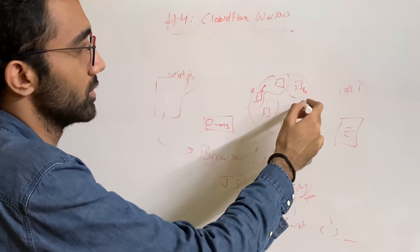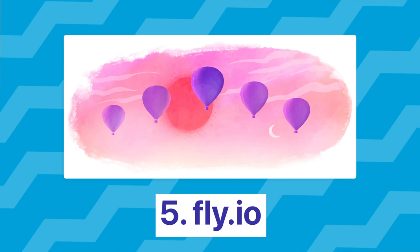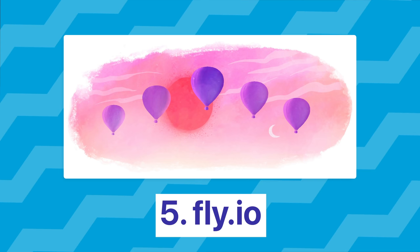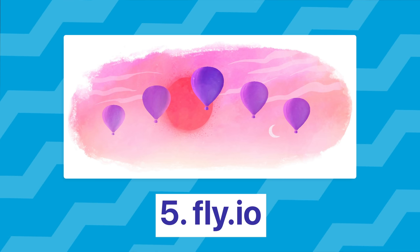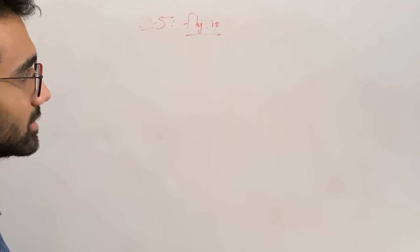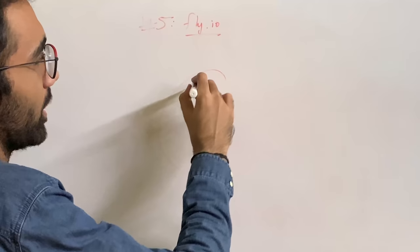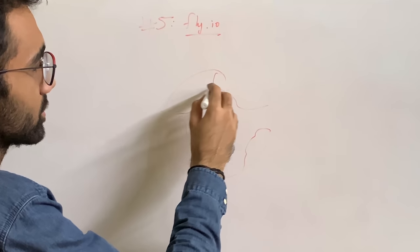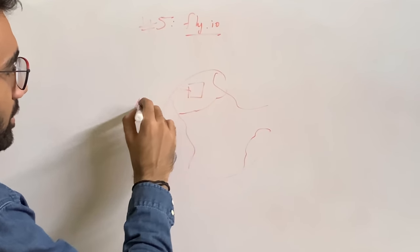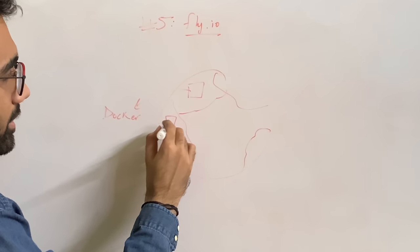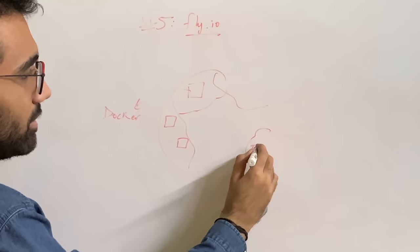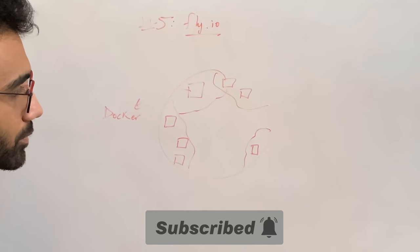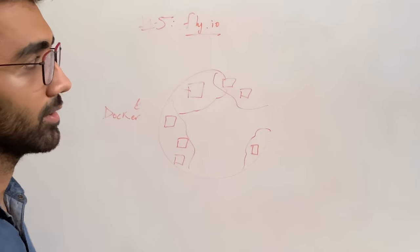And the fifth and final way which I have recently come across is how you can run your service using something like fly.io as a service. Now what fly.io does is pretty much what Cloudflare does, but instead of running it in a restrictive browser-like environment, fly.io can run your scripts inside of a Docker container. So this could be a Docker container and this container can spin up pretty much anywhere in the world on the closest location, obviously, of the user.